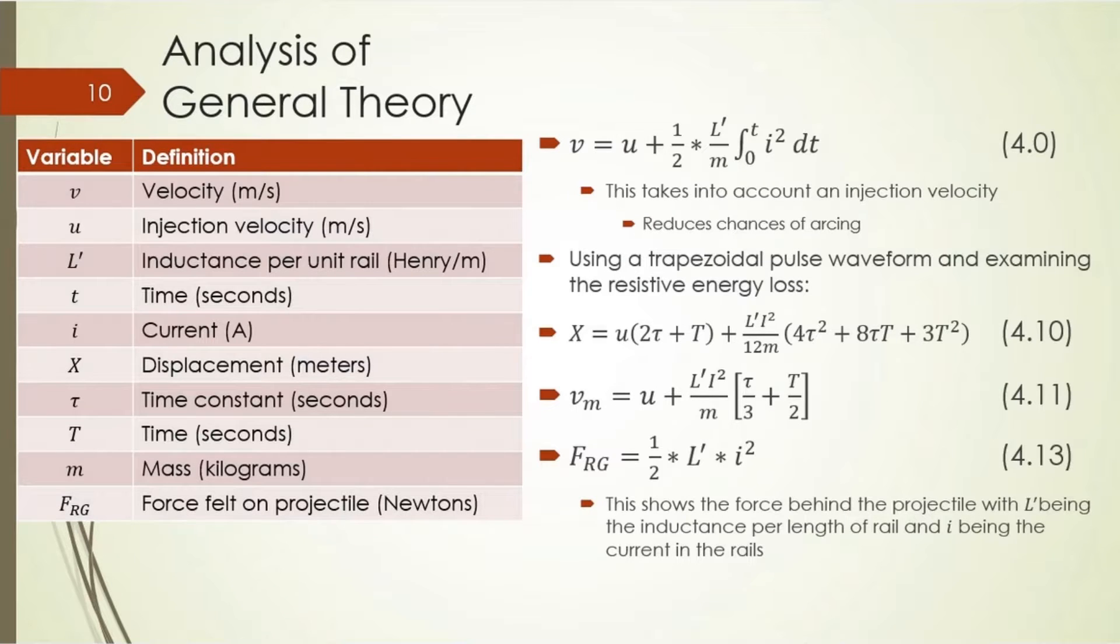Then I looked more in-depth into the general theory. This is a thesis provided by the Naval Postgraduate School. The first equation up here is the velocity for the projectile as it leaves the muzzle of the gun. It uses the initial injection velocity. A lot of railguns use compressed air or some sort of compressed gas to shoot the projectile into the rails as the power makes contact. This gets over any static friction and also gets over the initial inertia of the projectile. This thesis looked at a trapezoidal pulse waveform.